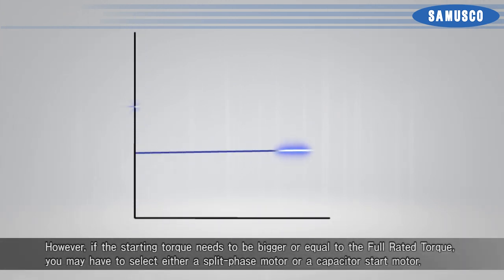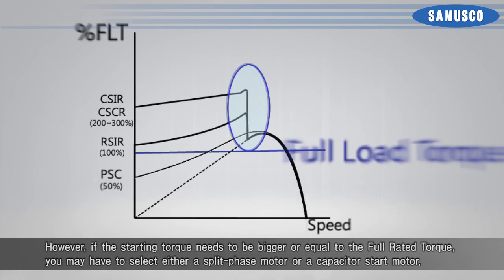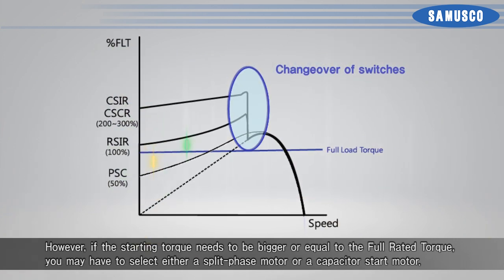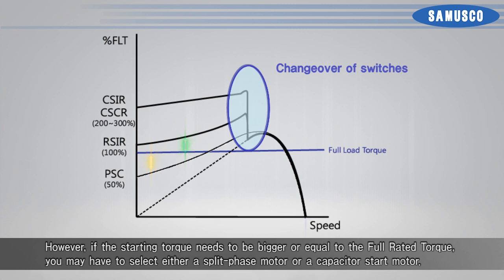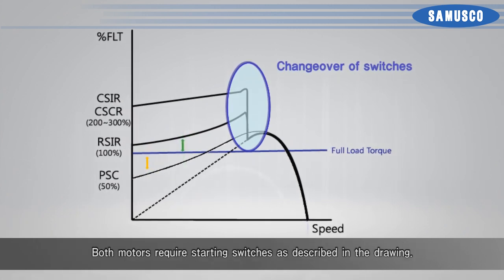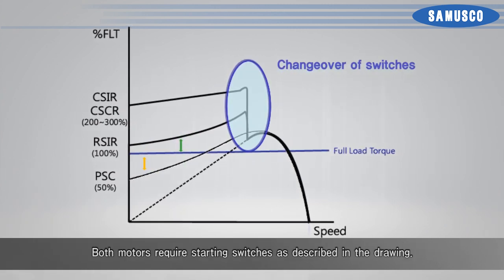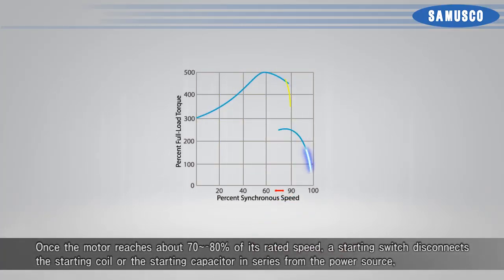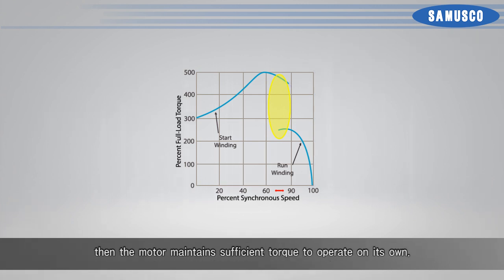However, if the starting torque needs to be bigger than or equal to the full rated torque, you may have to select either a split-phase motor or a capacitor start motor. Both motors require starting switches as described in the drawing. Once the motor reaches about 70 to 80% of its rated speed, a starting switch disconnects the starting coil or the starting capacitor in series from the power source. Then the motor maintains sufficient torque to operate on its own.